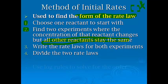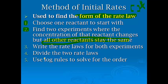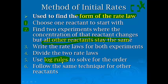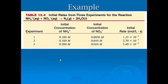It's kind of like a controlled experiment where we only change one thing and keep everything else the same. We write the rate laws for both experiments, we divide the two rates, and we use log rules. Now don't panic. This is going to be fairly straightforward. Then we follow the same technique for the other reactants.